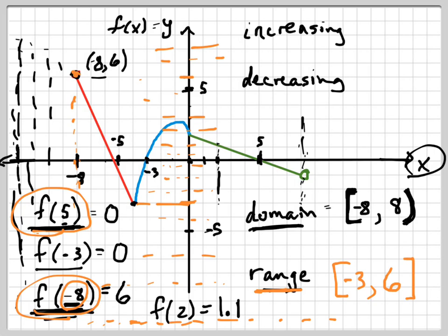The last thing is increasing and decreasing. Increasing and decreasing simply means: going from left to right, is the function rising or falling? This graph from negative 8 to negative 4 — what's happening as I go to the right? Decrease. The graph is going down. So whenever we do increasing and decreasing intervals, we use open brackets on both ends, because we don't really care about the endpoint values themselves. The y values are going down as you go left to right — so that's a decreasing interval from negative 8 to negative 4.